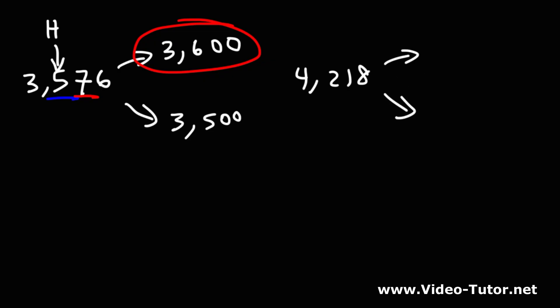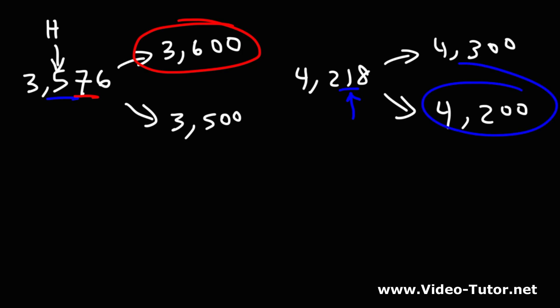For 4218, what are the two possibilities if we're going to round it to the nearest hundred? We could round it down to 4200 or up to 4300. Looking at the number in the tens place, one is part of the four or less group, so we're going to round it down to 4200.